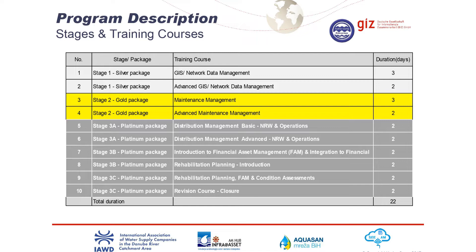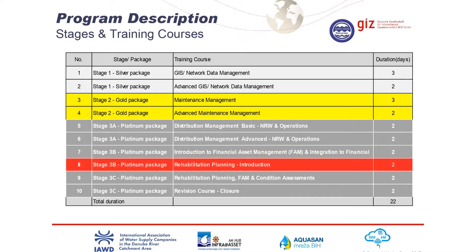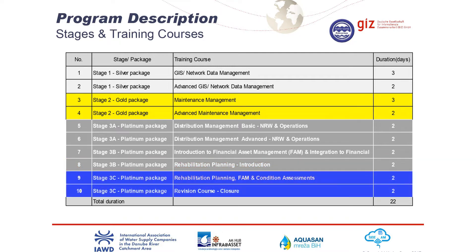The idea we have is to do a series of four trainings over the last two years — 2020 and 2021. In 2020, it's introduction to financial asset management and integration to financial systems. Since a lot of utilities queried how they integrate with the financial system, we will address that. And towards the end of the year, we're going to introduce rehabilitation planning. We'll revisit both topics — rehabilitation and financial asset management — in 2021.